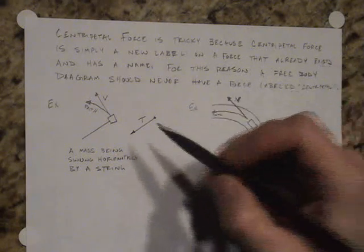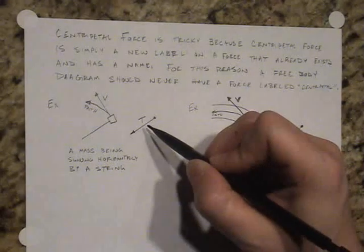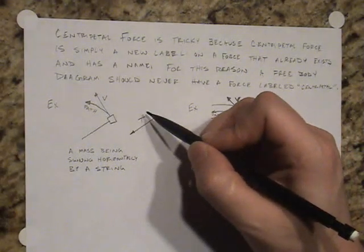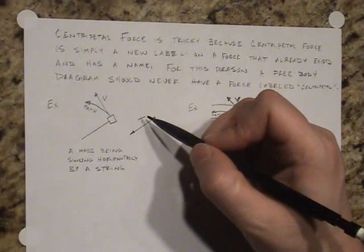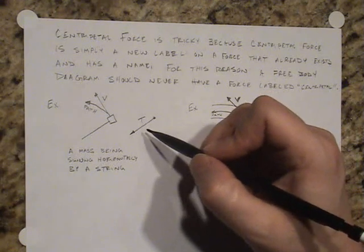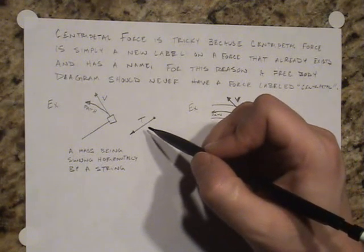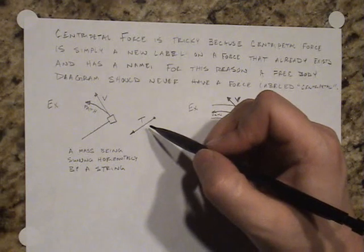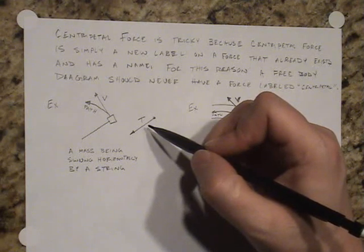But needless to say, you should never see in a free body diagram the word centripetal or FC. It exists, it is the cause of the turn, but I don't need to call it centripetal force because the centripetal force already has a pre-existing name.